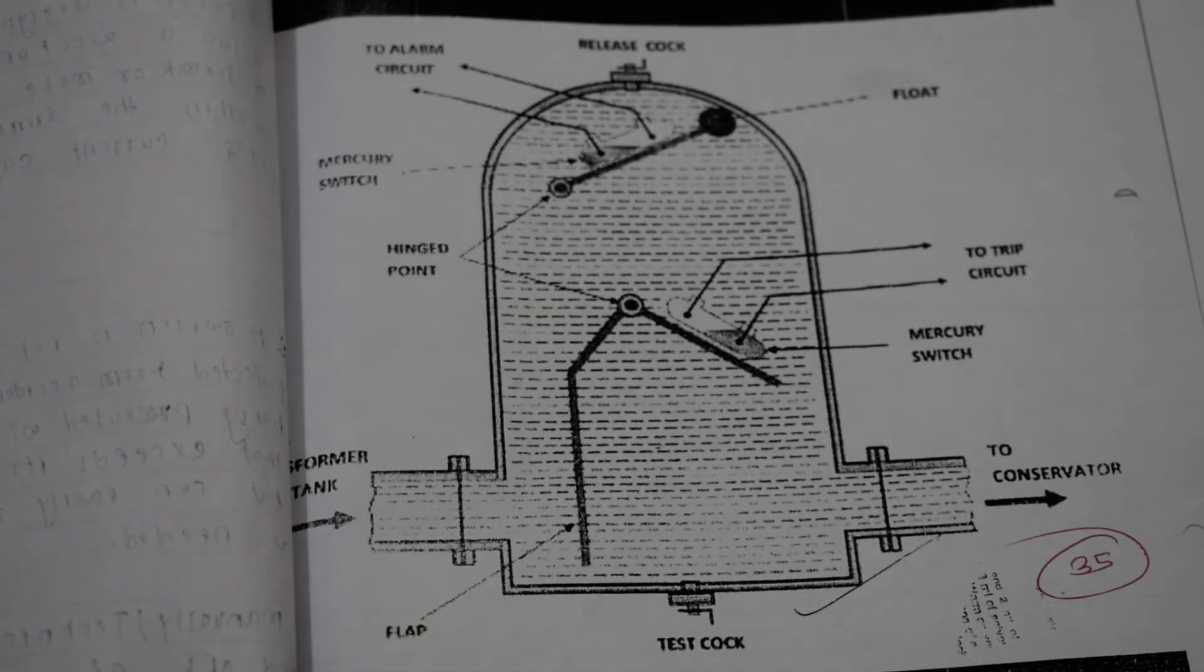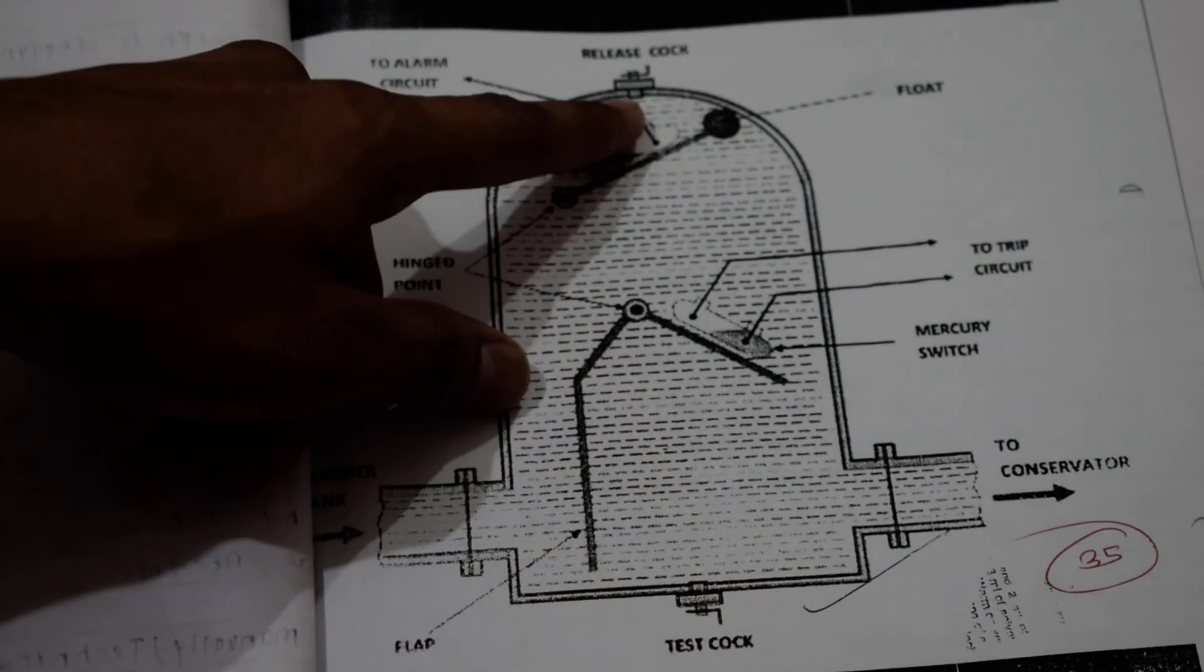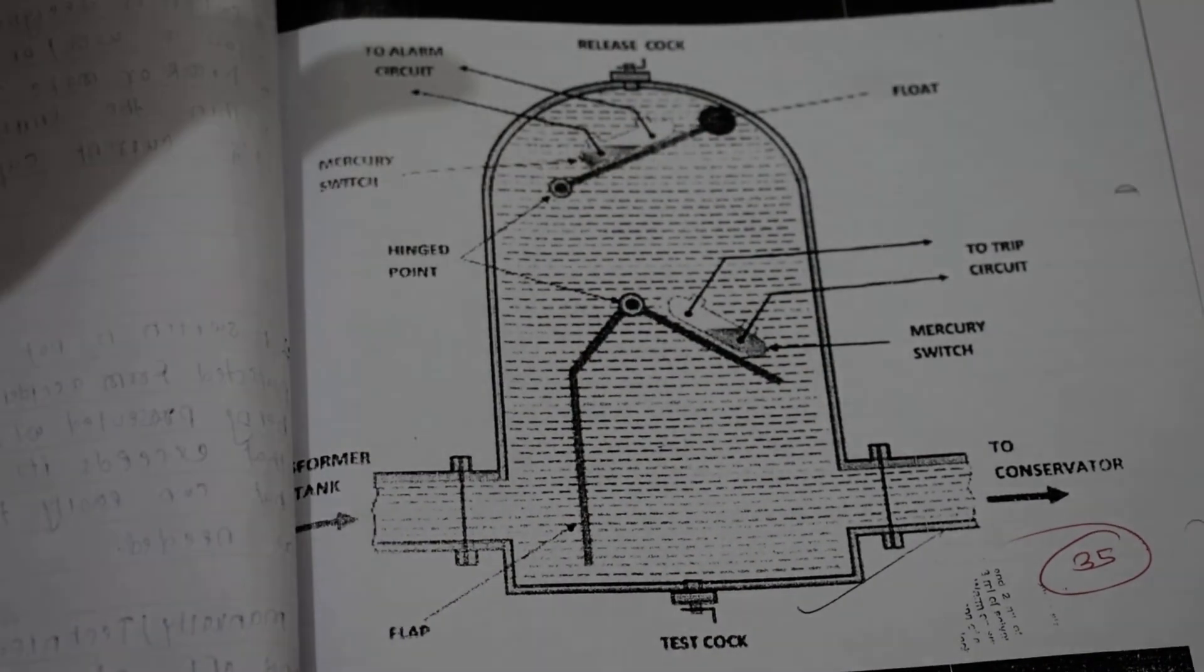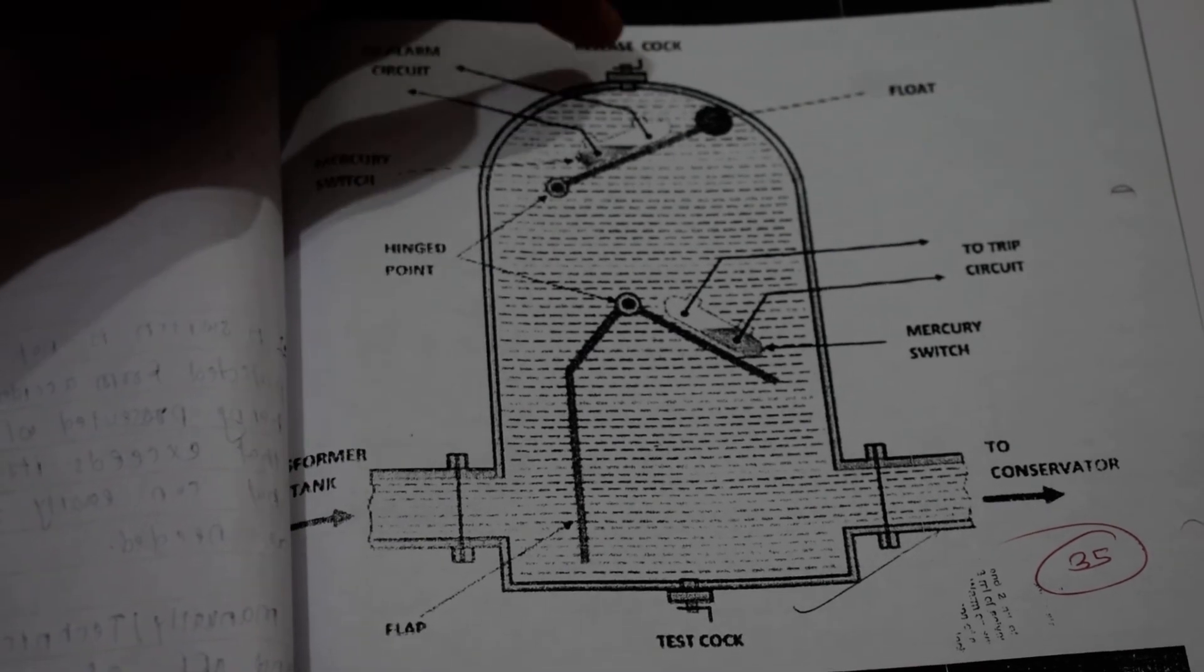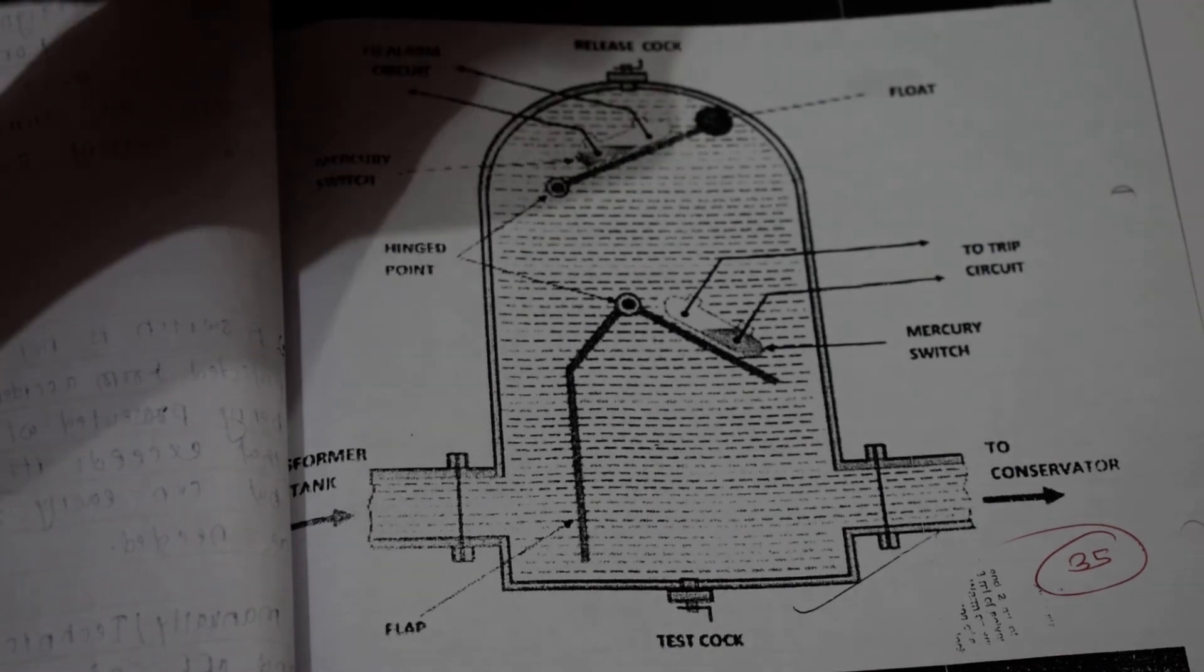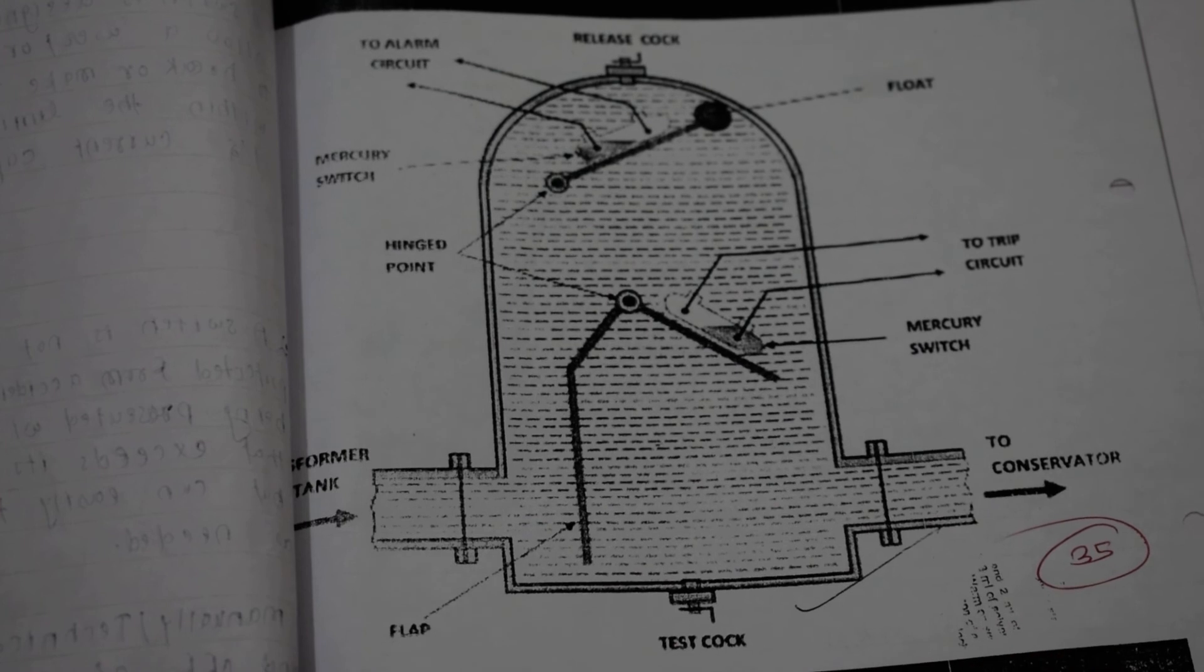What happens is that high pressure is produced which could damage the Buchholz Relay. Because of this, there is a diaphragm. The high pressure passes through the diaphragm to the atmosphere, which protects the Buchholz Relay. Because of this, the conservator is also protected.